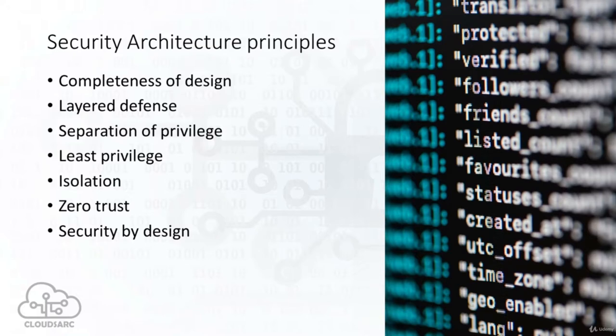A system that has critical data, processes or resources must be isolated such that it restricts public access. The system can be isolated in two ways: both physical or logical. Physical isolation is where the system with critical information is isolated from the system with public access information. In a logical isolation, security services layers are established between the public system and the critical systems.